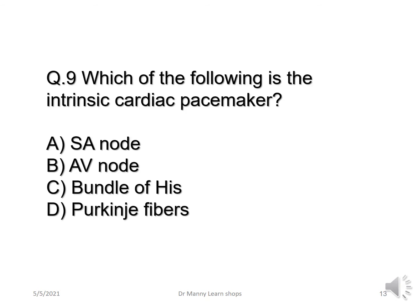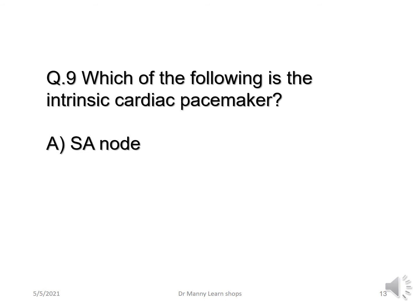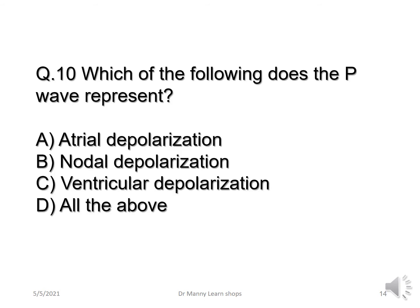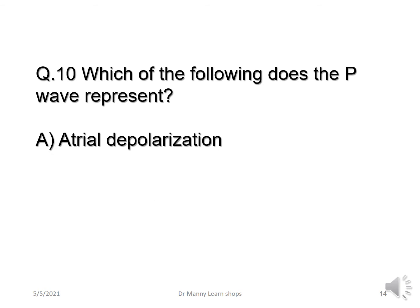Question nine: which of the following is the intrinsic cardiac pacemaker? A, the SA node; B, the AV node; C, the bundle of His; or D, the Purkinje fibers? The correct answer is the SA node. Question ten: which of the following does the P wave represent? The answer is A — atrial depolarization.